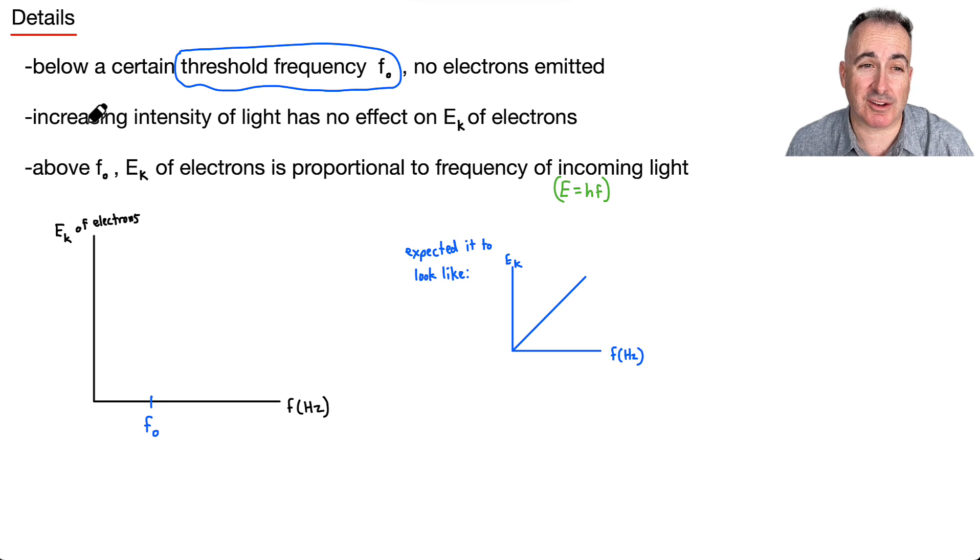It doesn't even matter how bright you make the light. You can increase the intensity of the light, but it won't matter. If it's below this f0, nothing happens. But once you are above this, then it does go linear and it does go like it should. So then it is proportional. So it's some sort of graph like this, for example. So that kind of works.